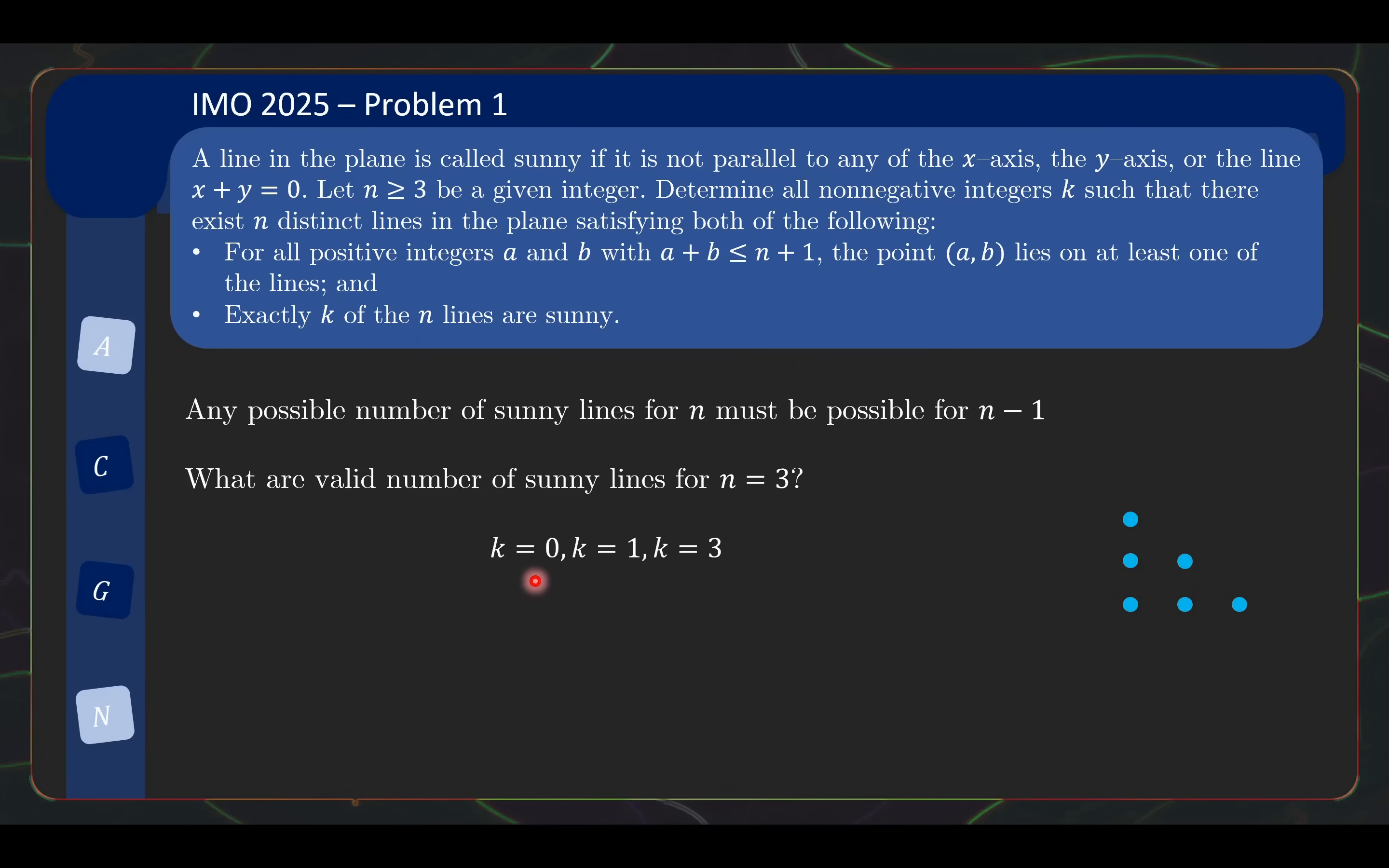So we already saw construction for k equals zero, k equals one, and k equals three. It remains to check how about k equals two. Is it possible?